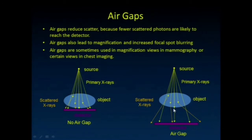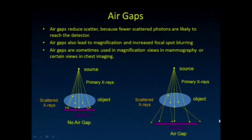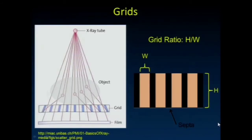Air gaps also reduce scatter. If you move the detector away from the object, you give room for scattered x-rays to escape and not strike the detector. That's why we don't use grids in magnification mammography—the air gap there helps keep scatter down.